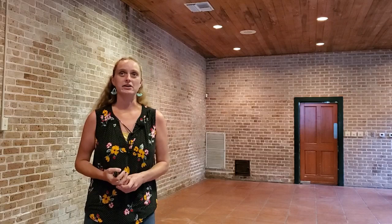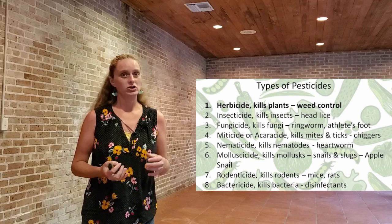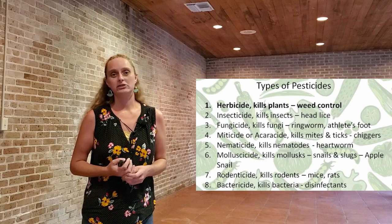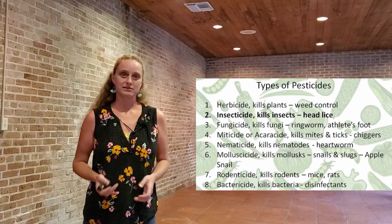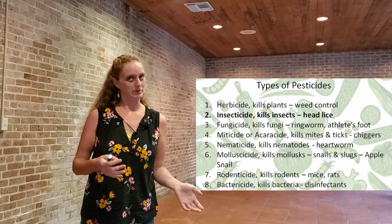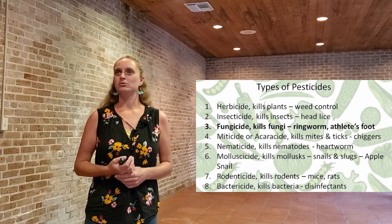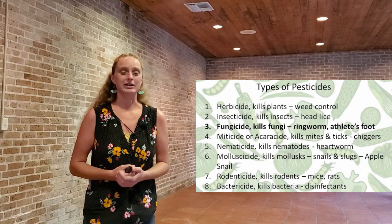There are a lot of different types and classifications of pesticides. Some common ones we see in home gardens would be herbicides, which kill plants — the prefix "herb" refers to plants — and that's typically used as a weed control product. Insecticides kill insects; a good human medicine analog would be products that kill head lice. Fungicides target fungi. In a human health standpoint, that would be ringworm or athlete's foot. In plants, that might be powdery mildew or any of the fungal pathogens that we see commonly.